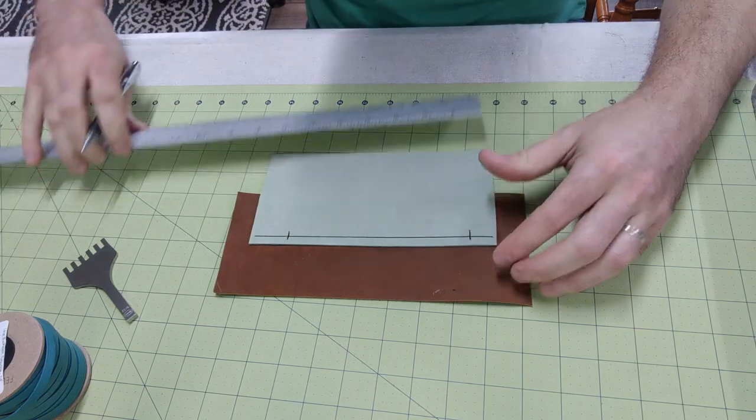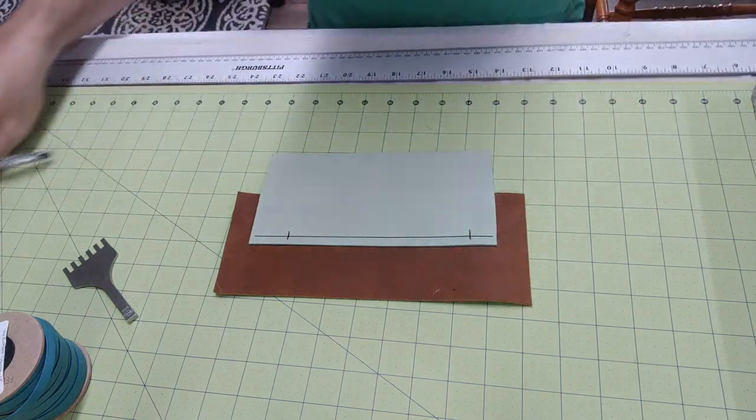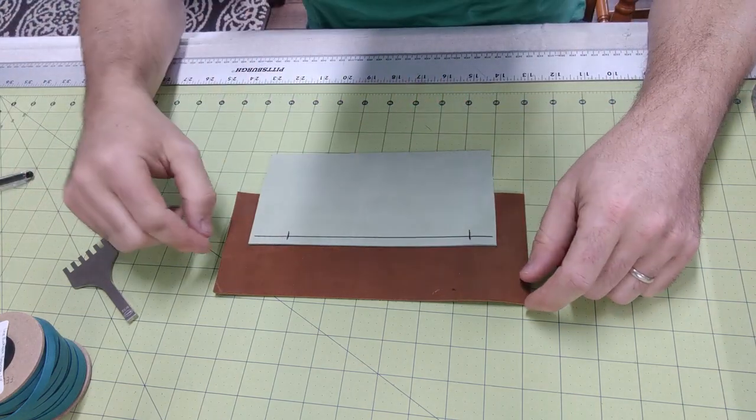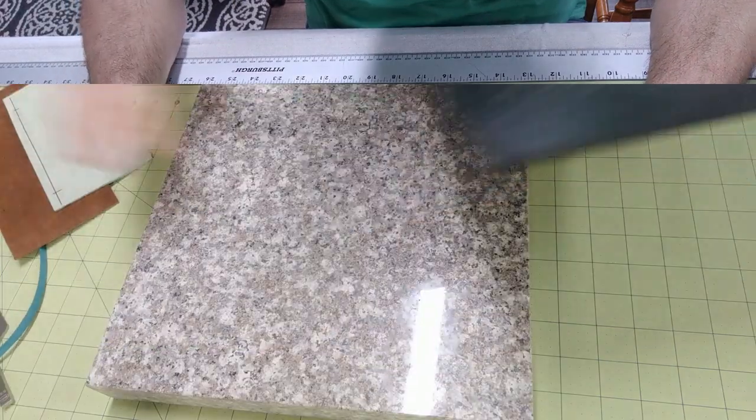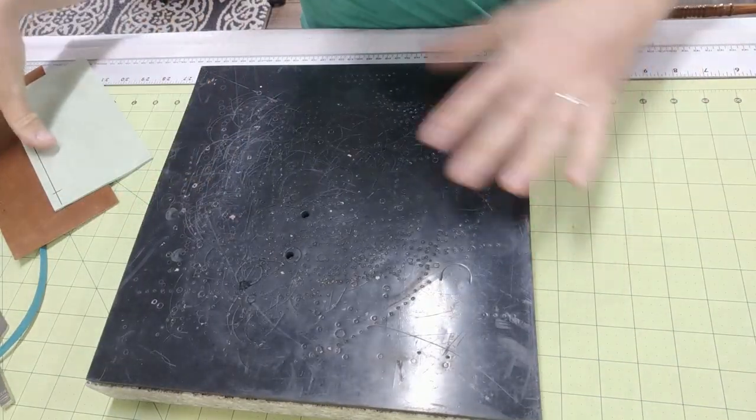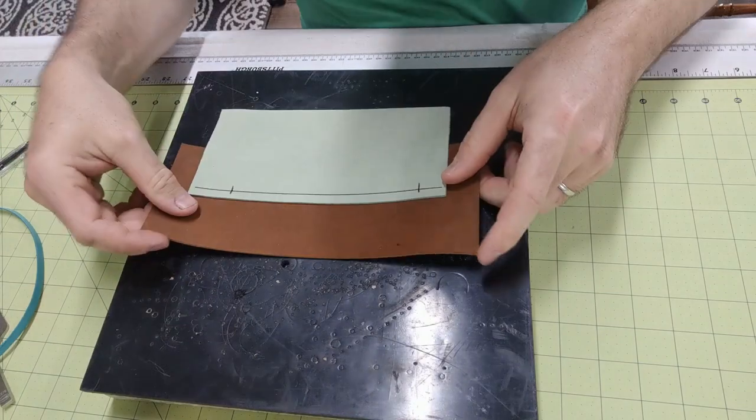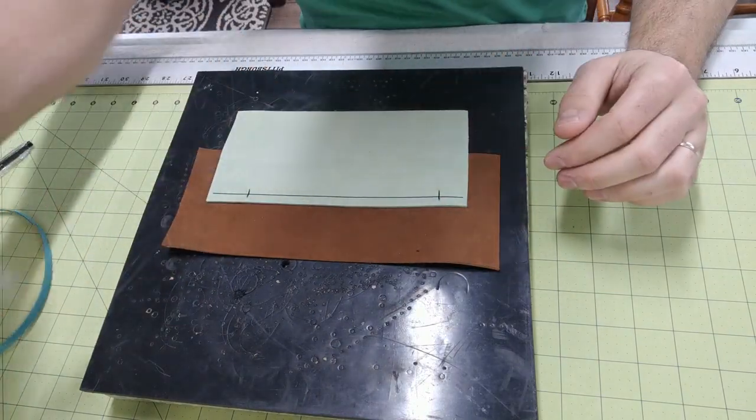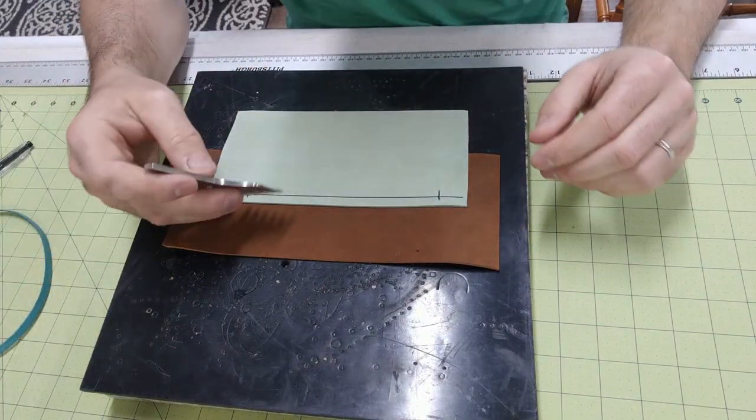In the next step using my buck stitch chisel I'm going to punch my holes. I have a one foot by one foot piece of granite for a solid base. Then on top of that I will put a piece of rubber to protect my chisel from hitting the granite.